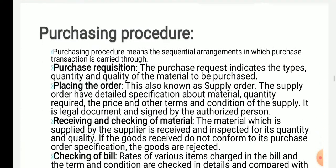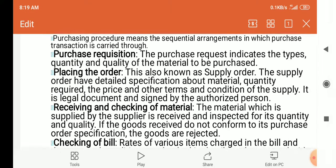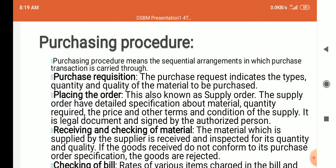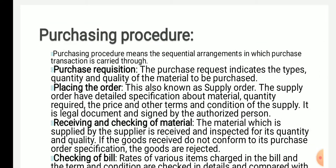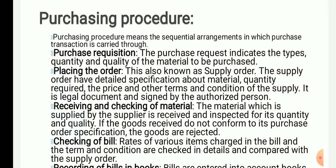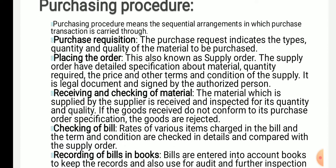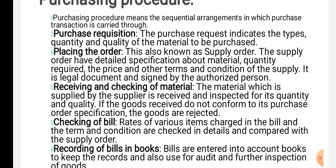Next is purchasing procedure — it is very important. The first step of purchasing is purchase requisition. In purchase requisition, you have to mention what quantity, what types, and what quality is required.